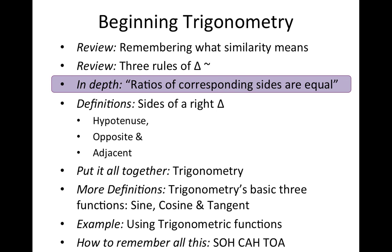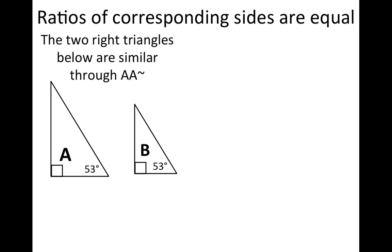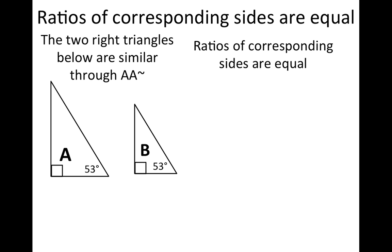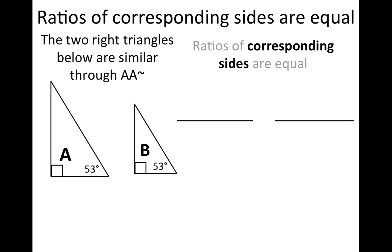Now we're going to go into depth. What does it mean when we say the ratios of the corresponding sides are equal? Below we have two right triangles, triangle A and triangle B, and they are similar because they have two congruent angles — they both have right angles and both have 53-degree angles. The ratios means we're going to have a ratio of two numbers — A over B, X over Y — of their corresponding sides. There's the large side of A, the large side of B, the small side of A, the small side of B.